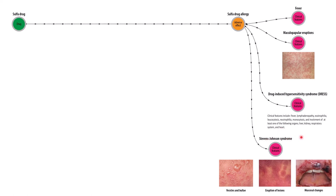With Stevens-Johnson syndrome, there are dramatic necrotic skin lesions. We won't go into great detail here as it will be covered in another lesson, but suffice it to say this is very severe and easy to diagnose following this type of drug reaction.